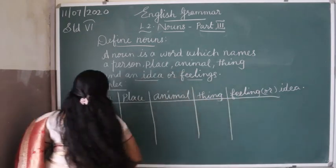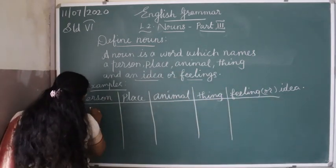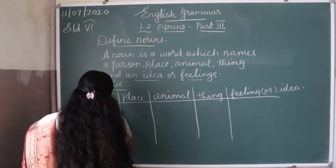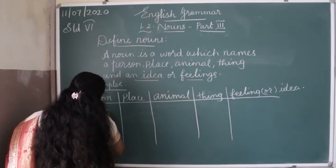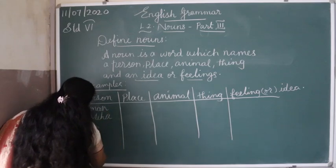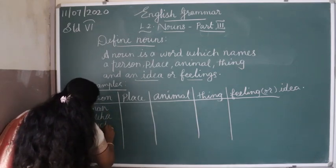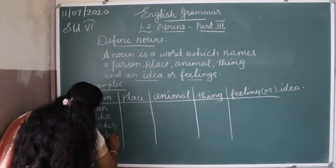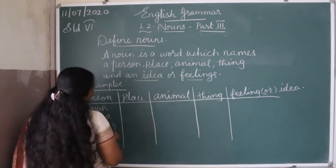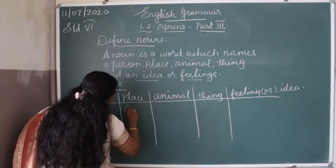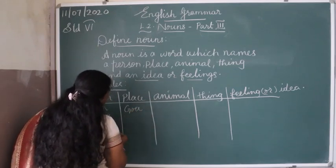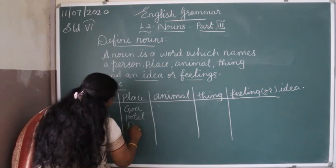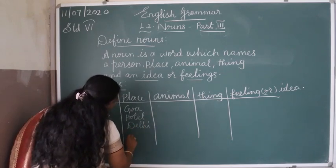So for person, we can say: man, Meha, teacher, student. Then for place, you can say: Goa, hotel, Delhi, beach.